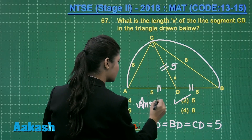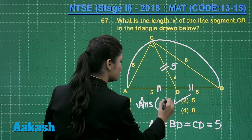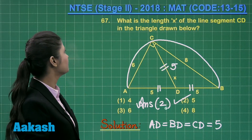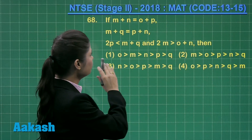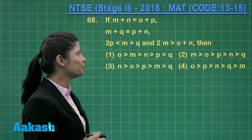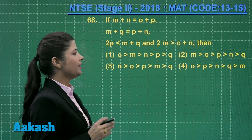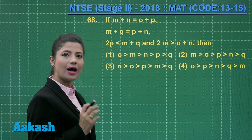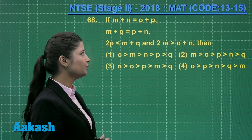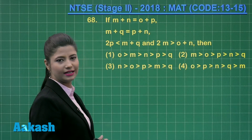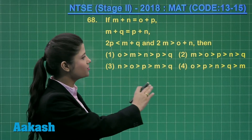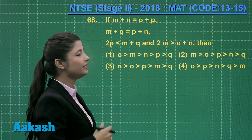So the correct answer here is option number 2, because AD equals BD equals CD, giving you x as 5. Now let us move on to question number 68. This question states: if M plus N equals O plus P, and M plus Q equals P plus N. Moreover, two inequalities are provided: 2P is less than M plus Q, and 2M is greater than O plus N.